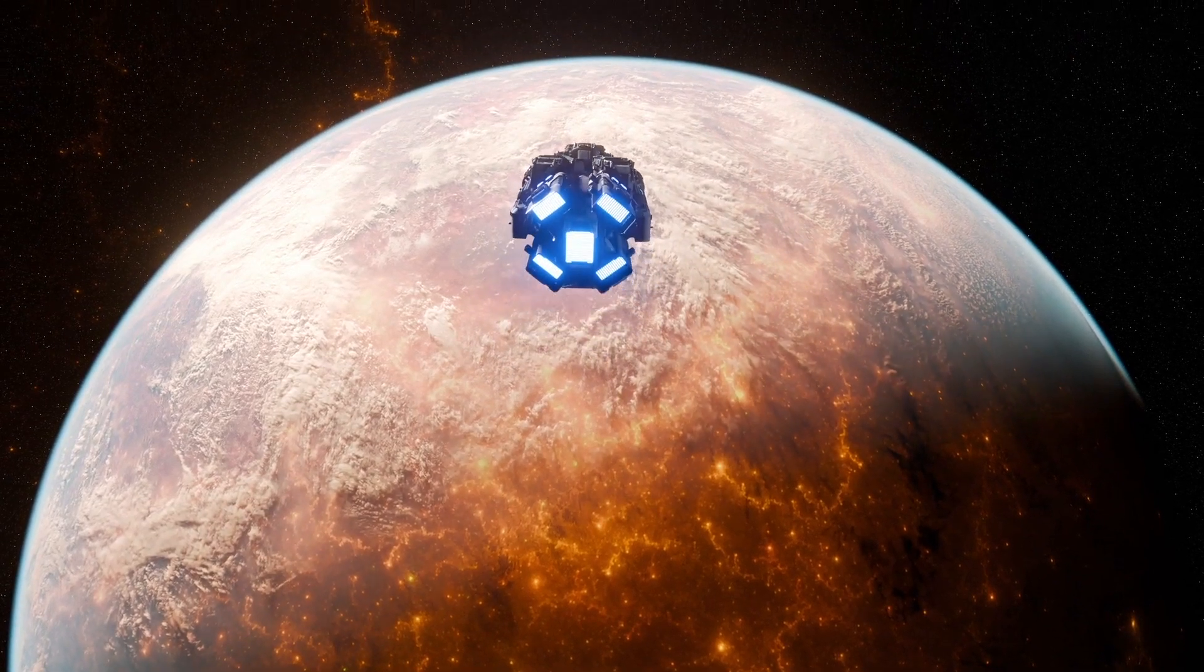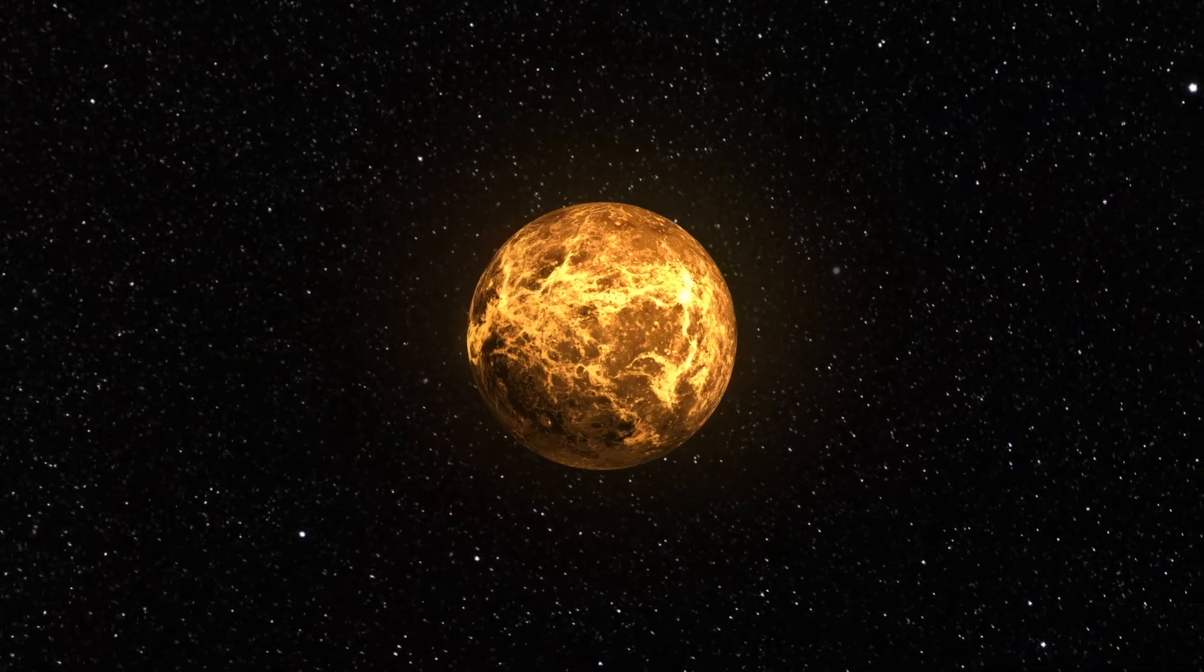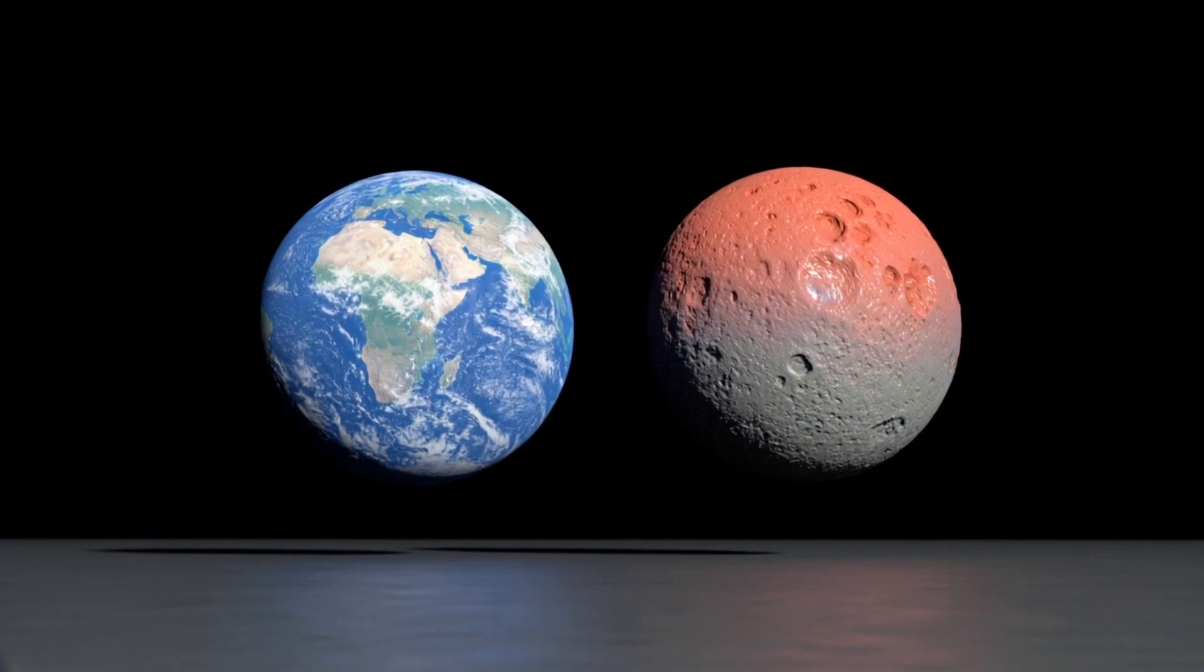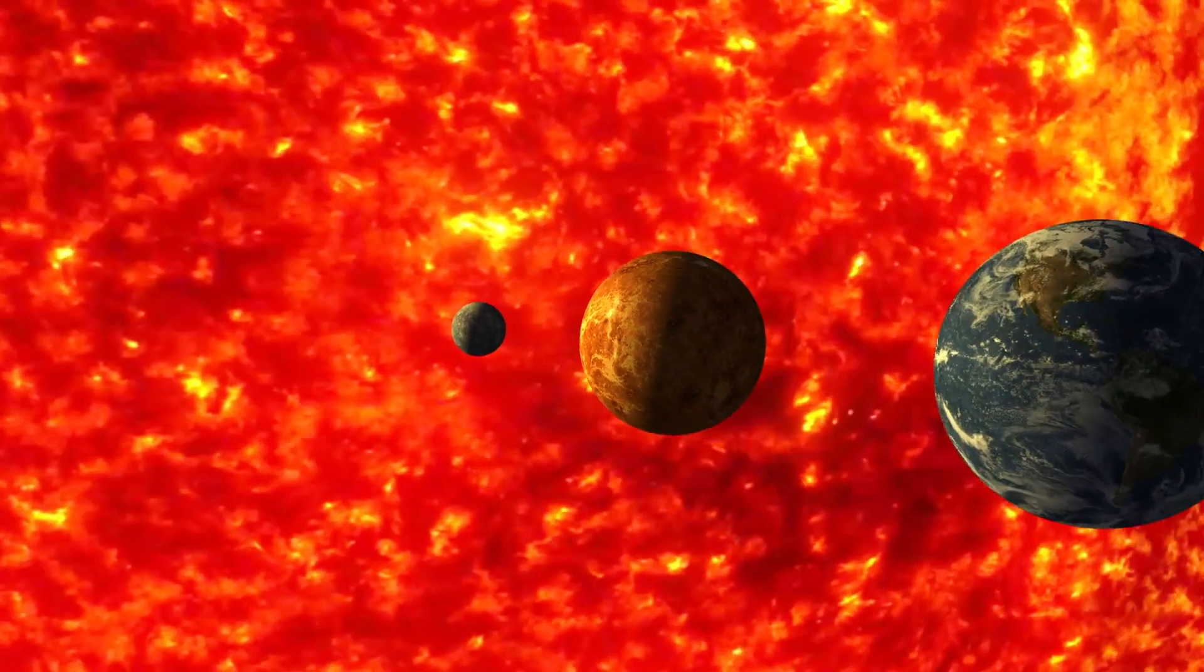Venus is the second planet from the Sun and one of four terrestrial planets. It is sometimes referred to as Earth's evil twin because of their similar mass, size, and relative location in the solar system.